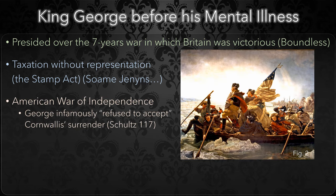King George prolonged the war and somewhat infamously refused to accept General Cornwallis' surrender, which resulted in small battles and skirmishes continuing for more than a year in the colonies after Cornwallis surrendered.